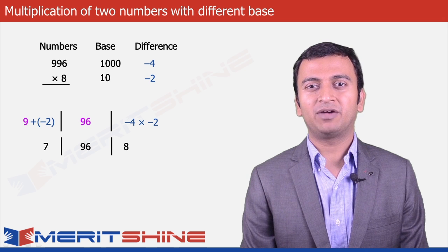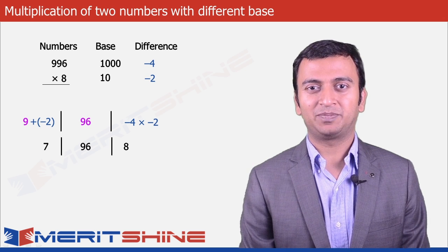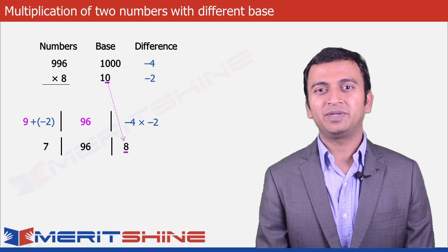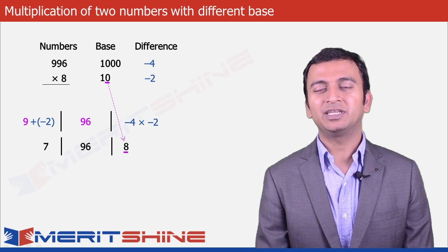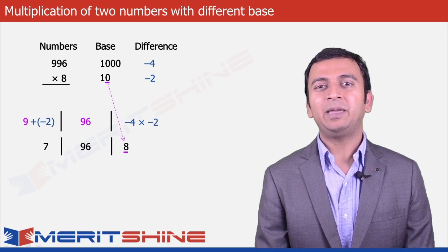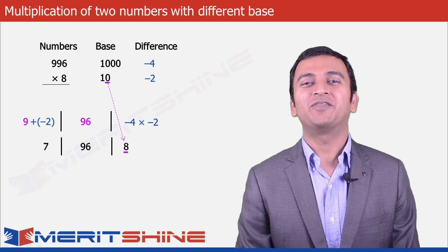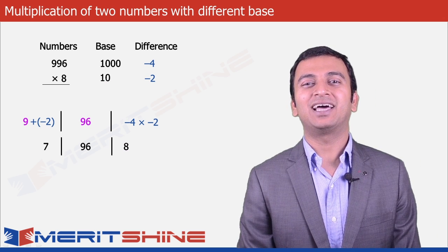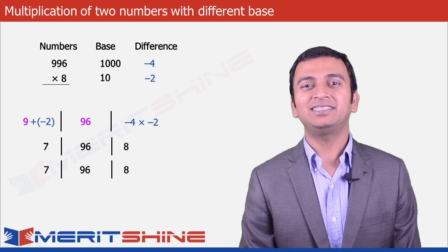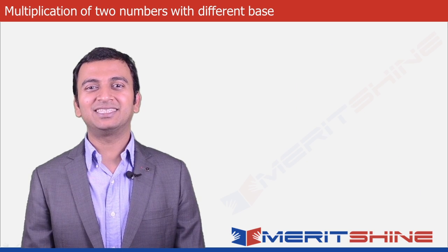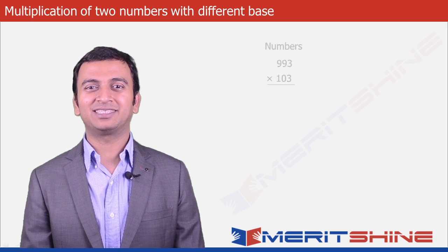Now we can write down our final answer by clubbing all these parts. The number of digits in the third part would always be equal to the number of zeros in the base of the smaller number. So we have our final answer as 7, 9, 6, 8. Let us take 993 into 103 as our next example.